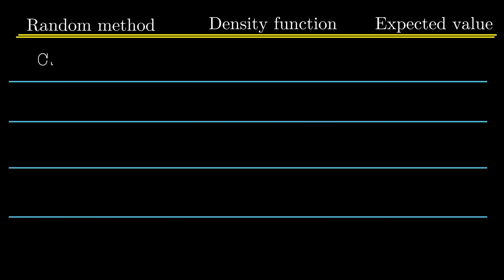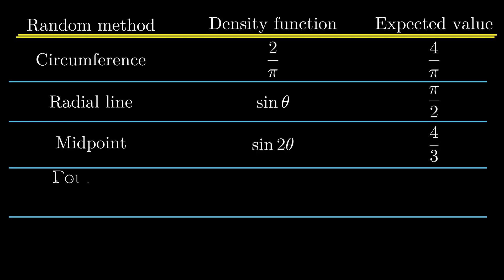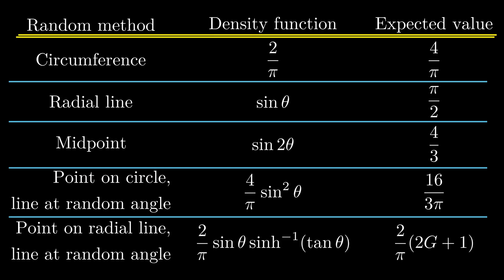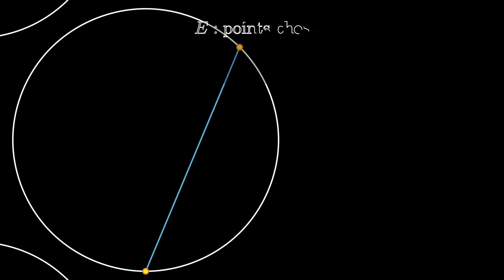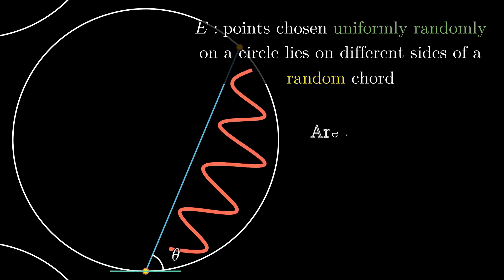The five expected values and the density functions show what changes when we interpret the randomness differently in the context of the Bertrand paradox from a mathematical standpoint. Because we now have the density functions, we can do much more — we can find the probabilities in closed form that Ben Sparks found using GeoGebra simulations in the Numberphile video. The problem Ben discusses is to find the probability that two points chosen uniformly in a circle lie on different sides of a random chord. To start with, the area bounded by a chord that subtends an angle of 2θ at the centre is (2θ − sin θ) / 2.